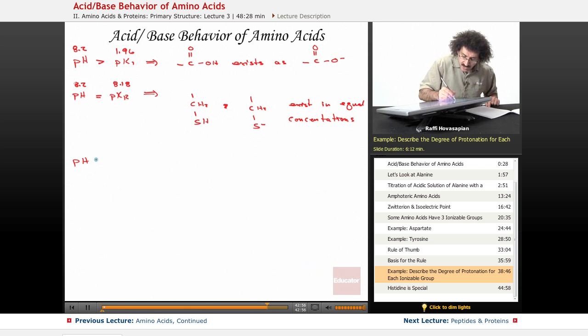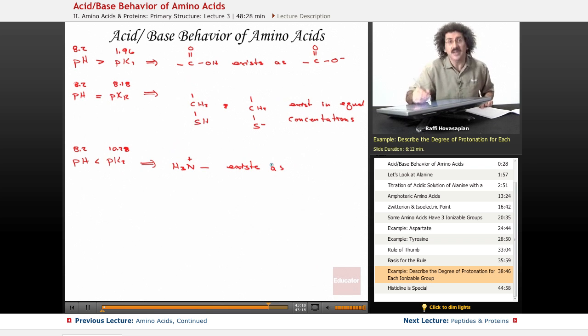Now, the pH happens to be less than the pK2. Again, the pH is 8.2, and this is 10.28. Well, this implies that the amino group, the alpha amino group, exists as its protonated form. The pH is less than the pKa, so it has not ripped away this hydrogen. It's still H3N plus. So that's it.